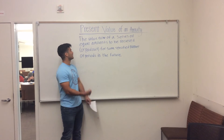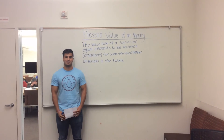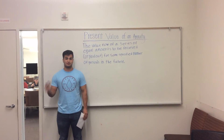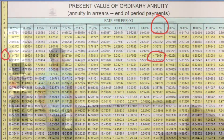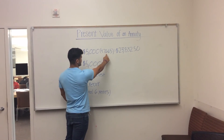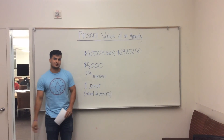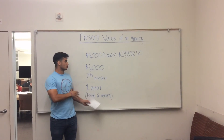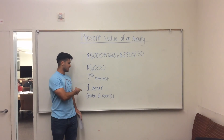I'm Alfredo Perez, and today we'll be talking about the present value of an annuity. The present value of an annuity is the current value of amounts to be received in the future. To find the number, we find the intersection of 7% interest and six years, which comes out to 4.76654. Taking $5,000 and multiplying by 4.7665, we get a total of $23,832.50, which means $23,000 today would be worth about $30,000 at the end of this period.